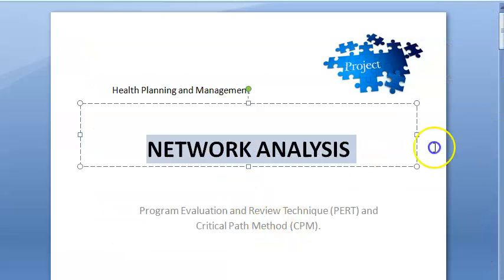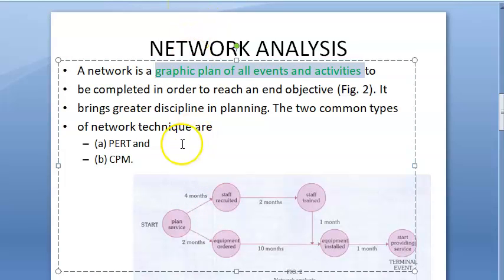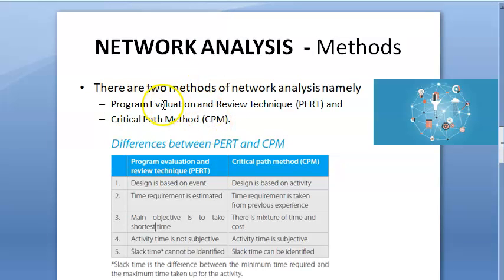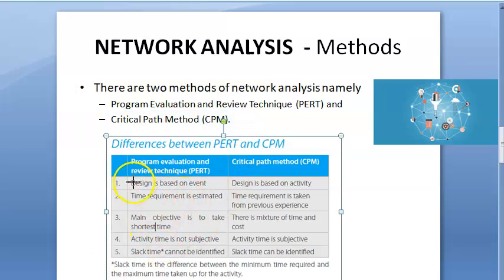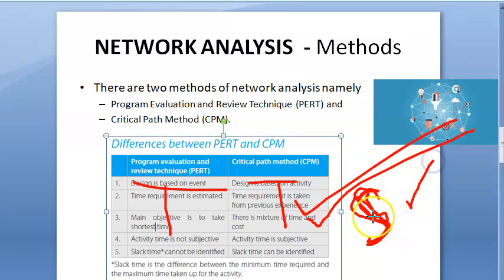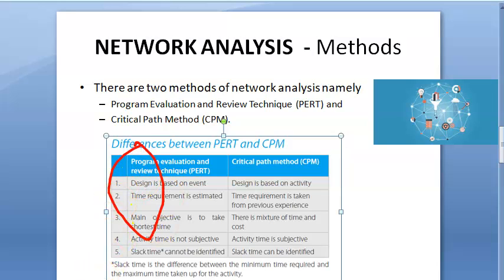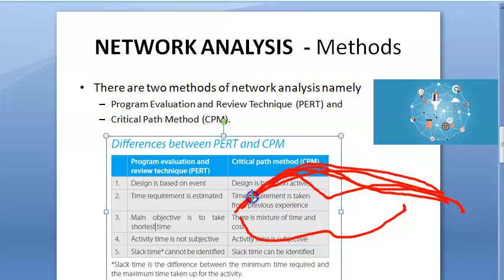To summarize: network analysis comes under project management. There are two types — PERT and CPM. A network is a graphic plan of all events and activities to be completed in order to reach your end objective. In PERT, the time required is estimated; in CPM, the time is known from previous experience, so you can identify the slack time. In CPM, you draw the network and find out which path takes the longest time — that critical path receives more attention.